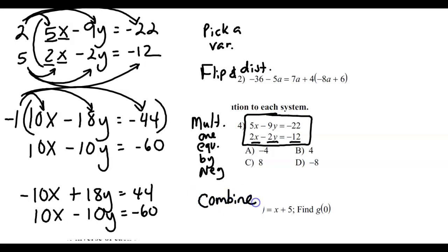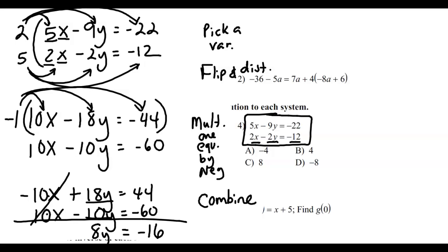Now we're ready for the next step — this is why we call it the elimination method. Now that I've got these two x terms with the same number but opposite signs, I'm going to combine the equations together, and the x's are going to cancel. Negative 10 plus 10 is 0, so they cancel. Then 18 take away 10 is 8, so I end up with 8y. And 44 combined with negative 60 gives negative 16. Then I divide both sides by 8, and I end up with y equals negative 2.